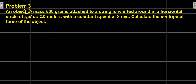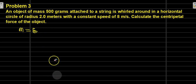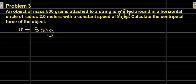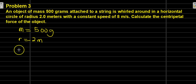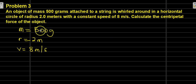Let us also look at another problem. An object of mass 500 grams, attached to a string, is swung around a horizontal circle of radius 2.0 meters, with a constant speed of 8 meters per second. Compute the centrifugal force of the object. Remember that this is given in grams, so we need to convert it to kilograms, which is the SI unit of mass.